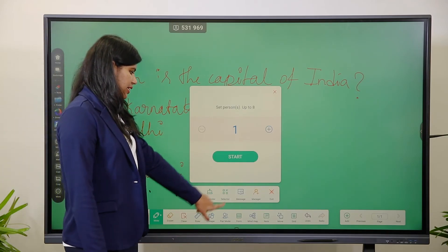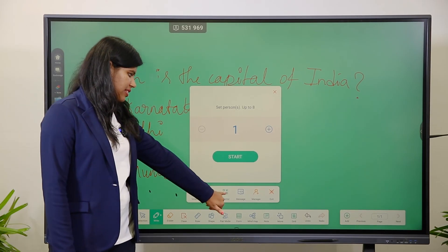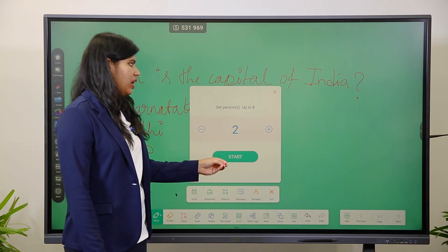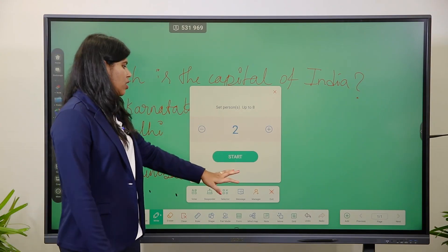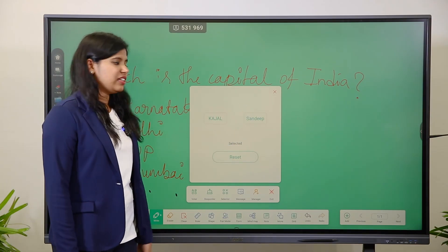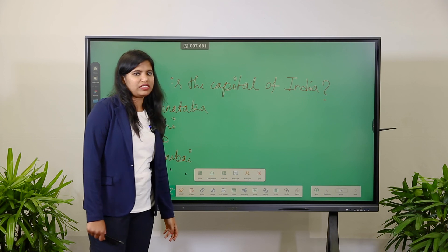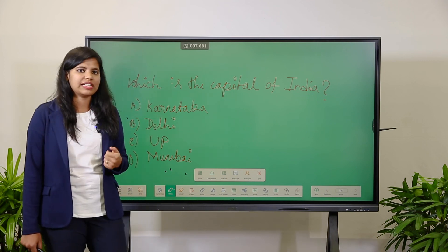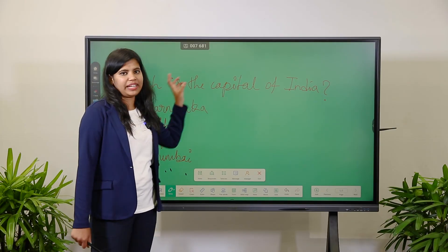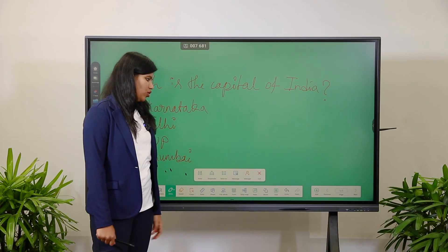Next is the Selector. When teachers want to choose students randomly, they use this Selector. You set the number of students to select — for example, choosing two from eight students who have joined — click Start, and two names are displayed for any activity. Next is the Message option: when students want to ask a question during class, they can send a query to the teacher, which appears on the display. Teachers can also disable this message option.